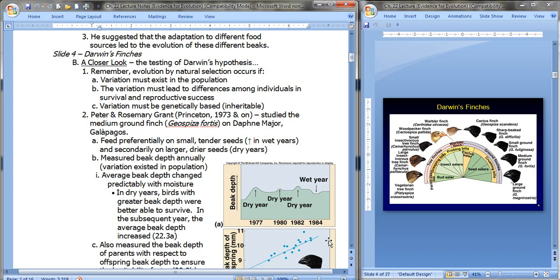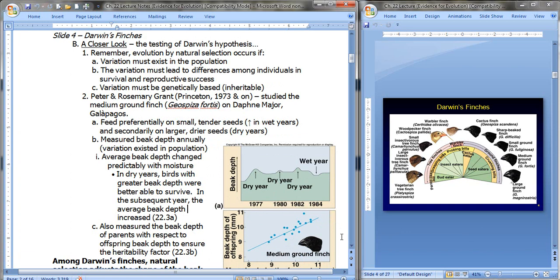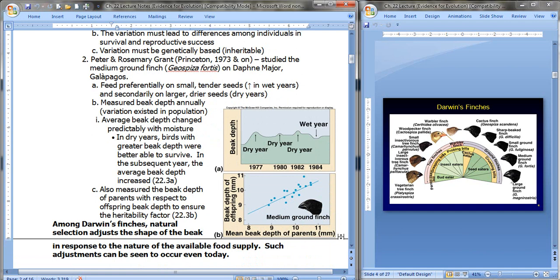Beginning in the 70's, Peter and Rosemary Grant studied the medium ground finch on Daphne Major in the Galapagos. And that's this guy, right here. Now, what they would do is they would measure the beak depth annually, and they noticed that there was variation within the population. Some were deeper than others. These birds feed preferentially on small, tender seeds, and we see this in the wet years, because there are lots of these seeds in wet years, of course.